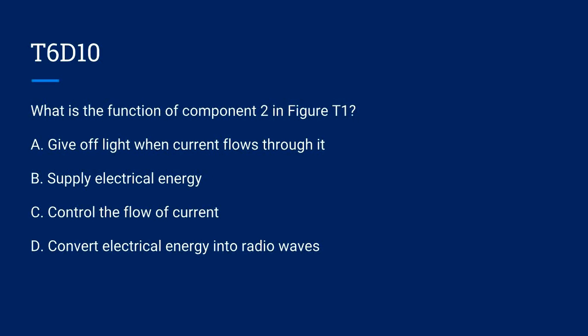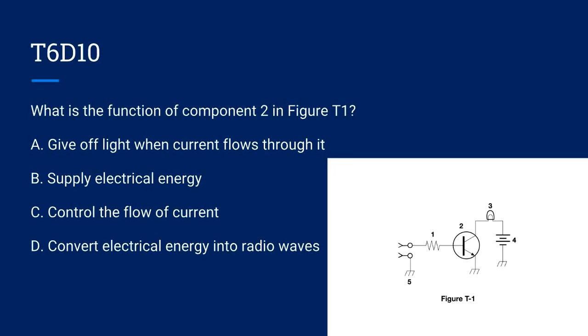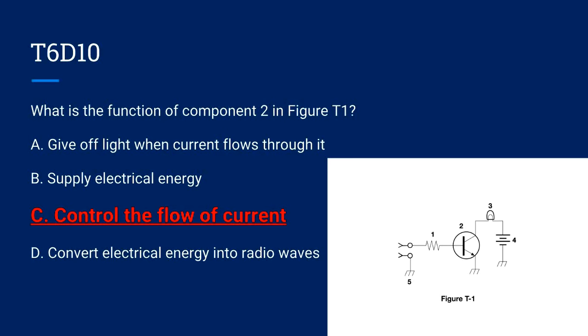T6D10. What is the function of component 2 in figure 1? A. Give off light when current flows through it. B. Supply electrical energy. C. Control the flow of current. Or D. Convert electrical energy into radio waves. The correct answer is C. Control the flow of current.